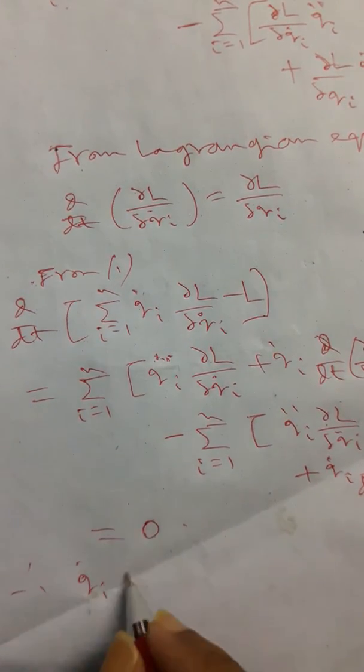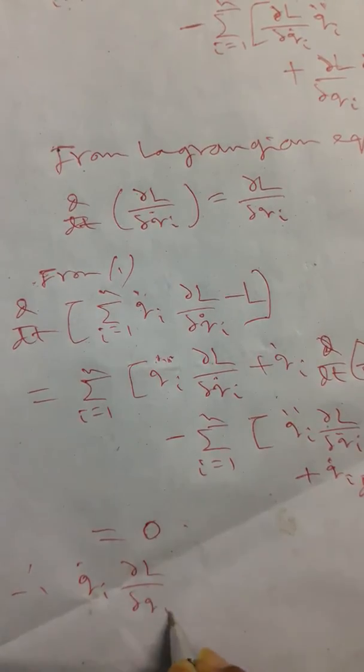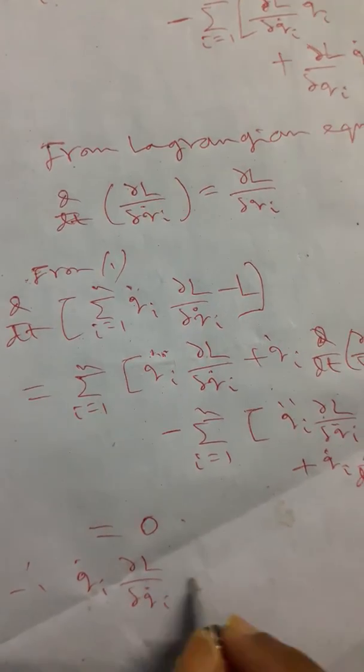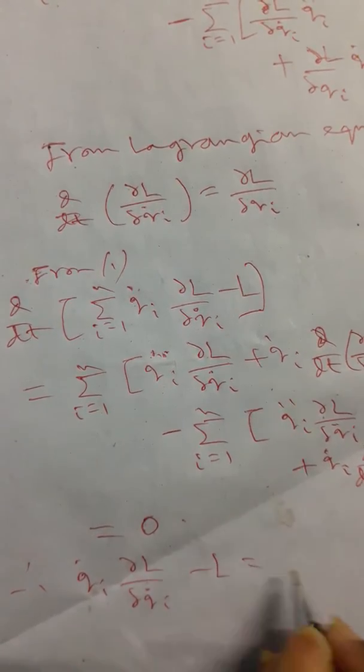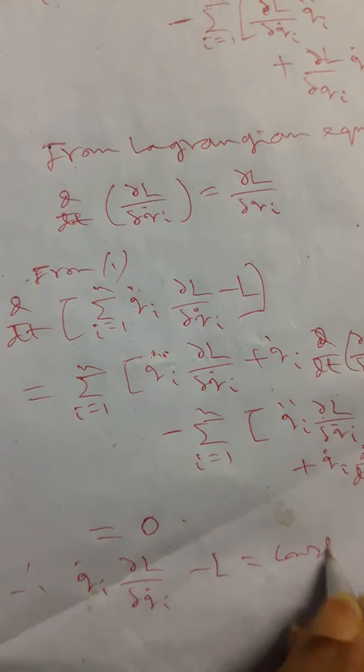Since the total derivative is zero, it is clear from differential calculus that the entire quantity within the bracket is constant. So we have: ∑ q-dot-i times (∂L/∂q-dot-i) minus L equals a constant.